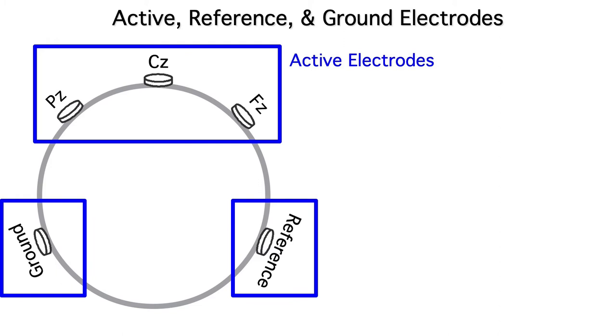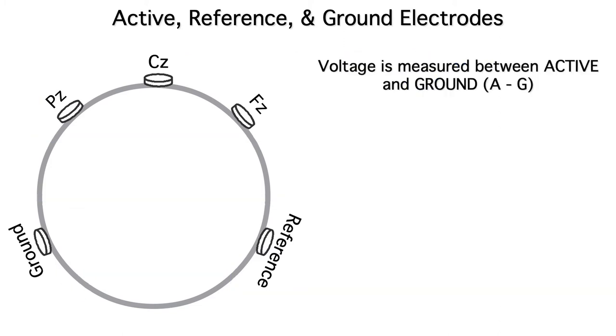Because voltage is the potential between two sites, we initially measure the voltage between an active electrode and the ground electrode. Remember, that's the same as the absolute voltage at the active electrode minus the absolute voltage at the ground electrode, or A minus G.